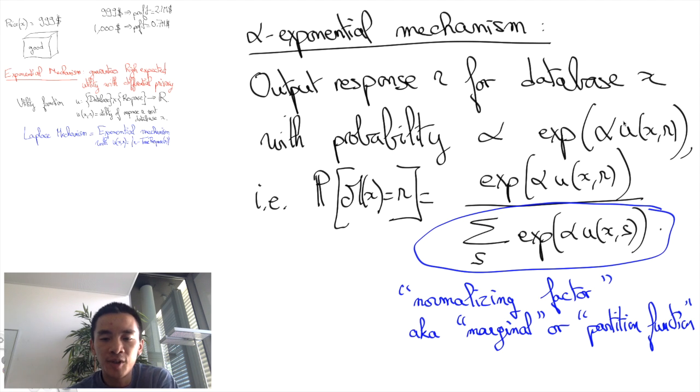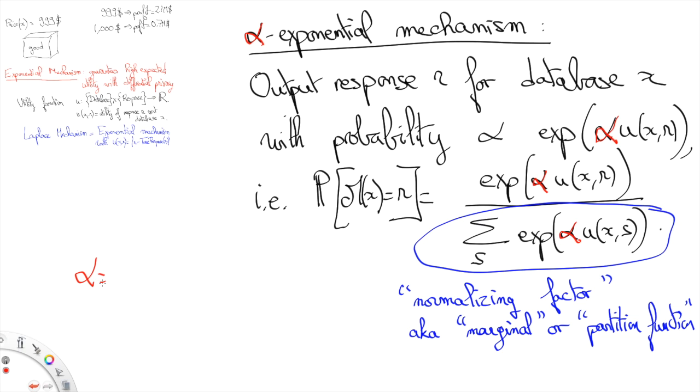Now, in this expression we have a parameter alpha. This parameter represents the privacy versus accuracy trade-off.